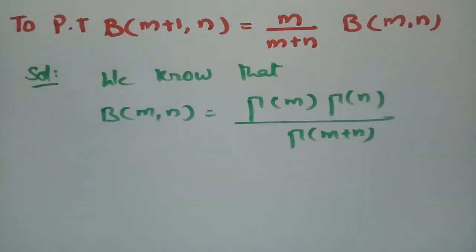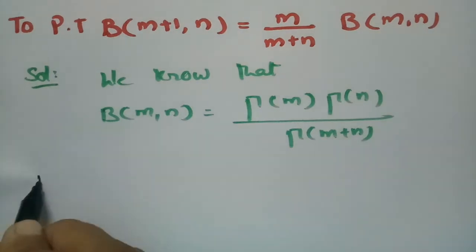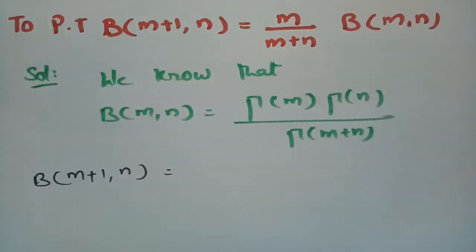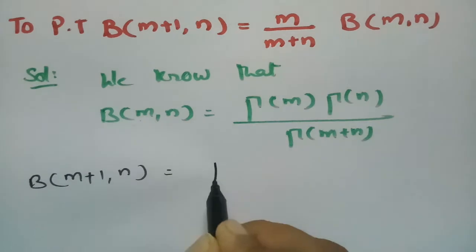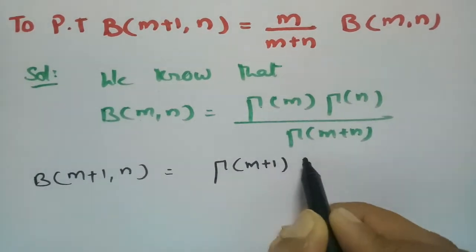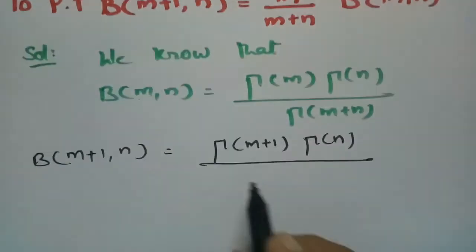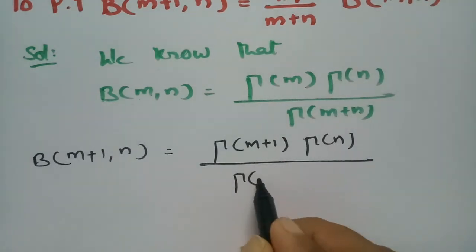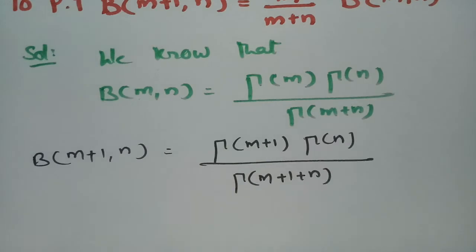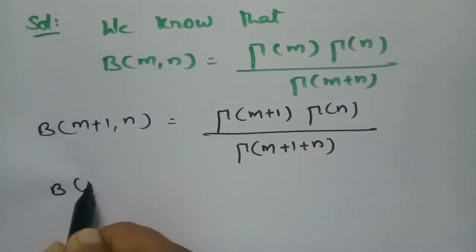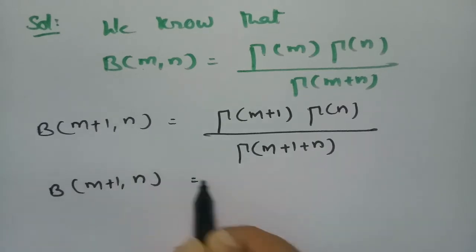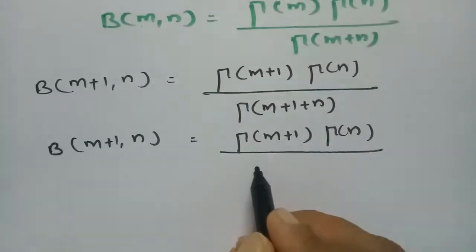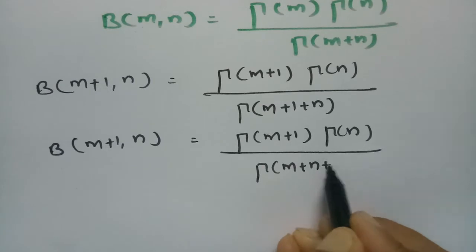First, we have to find beta of m plus 1 comma n. In this relation, we substitute m plus 1 in place of m. So in place of gamma m we write gamma of m plus 1, and the denominator becomes gamma of m plus n plus 1. Therefore, beta of m plus 1 comma n is equal to gamma of m plus 1 times gamma n by gamma of m plus n plus 1.